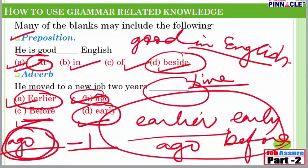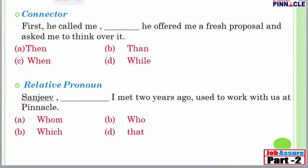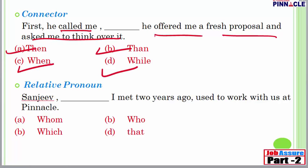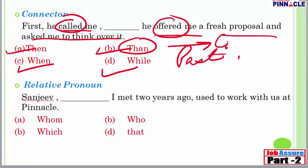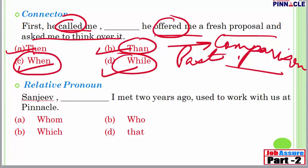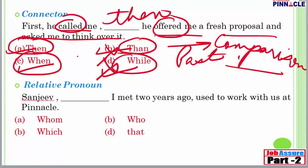Sometimes in the blank you will see 'a' or 'an,' which tells you a noun needs to be filled in — that's why knowing which part of speech a word belongs to is important. Next, let us look at connectors. 'First, he called me ___ he offered me a fresh proposal.' The options are 'then,' 'when,' 'while,' or 'than.' Since the sentence is in past tense and there is no comparison or continuous tense, 'then' is the right answer.